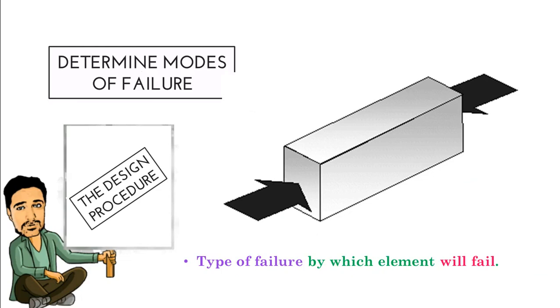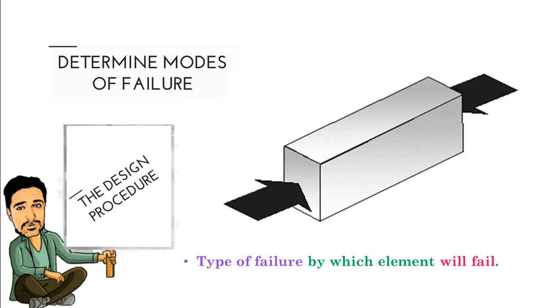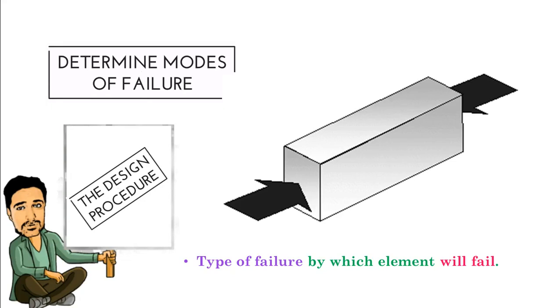Next step is determining modes of failure. For example, you can see the beam - compression is the mode of failure here. So what type of failure will happen is decided in this step.